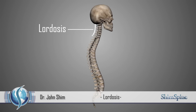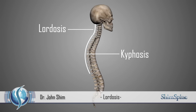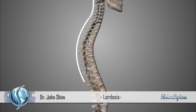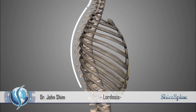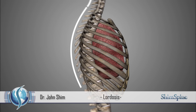The upper back, or the thoracic spine, then curves forwards. This forward curvature of the spine, which is called kyphosis, also allows development of a concave space in the upper body, which then forms a protective cage with the ribs to house structures such as the lungs, the heart, and the liver.